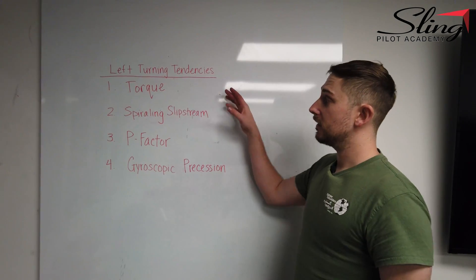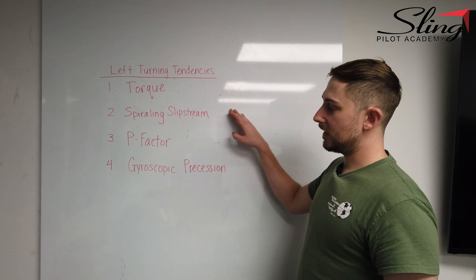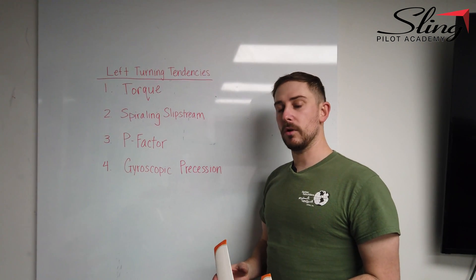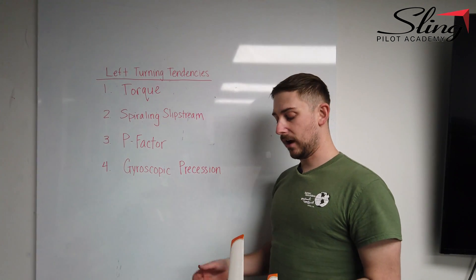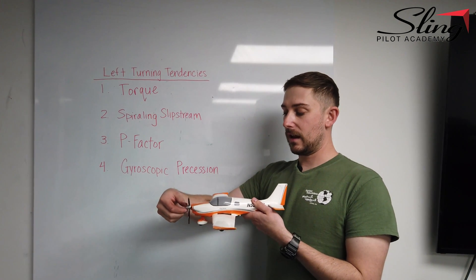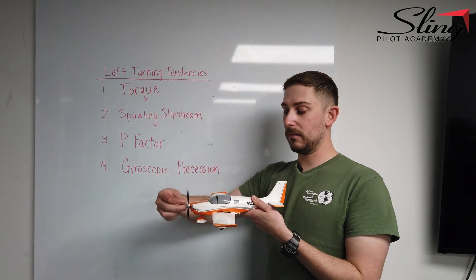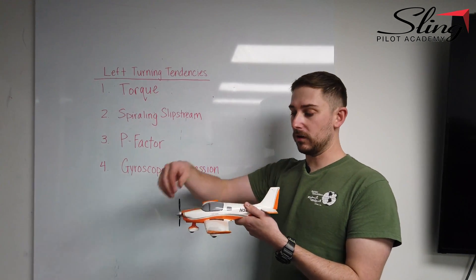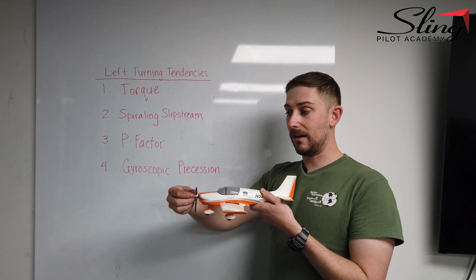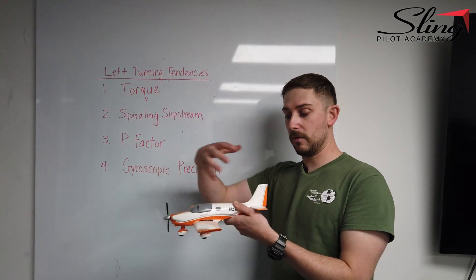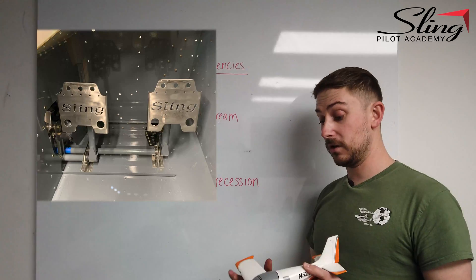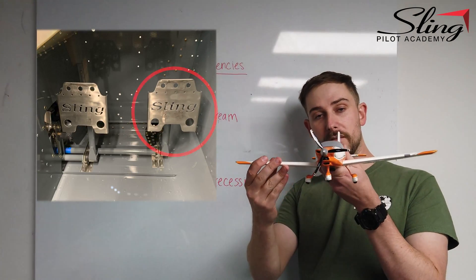To summarize, all four left turning tendencies don't happen all at once — they can occur at different phases of flight. But where they are most pronounced is at low airspeed with high RPM, creating a lot of airflow and torque. That could be during the takeoff roll, where you have slow speed and a high amount of air moving across the aircraft. You counteract these by applying a little bit of right rudder.